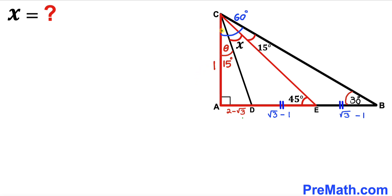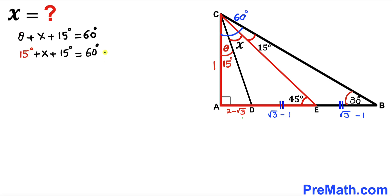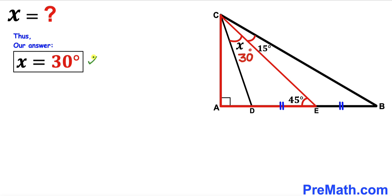For the final step: the whole angle is the sum of theta plus X plus 15 degrees, which equals 60 degrees. So theta + X + 15° = 60°. Since theta is 15 degrees, combining like terms gives X + 30° = 60°. Subtracting 30 degrees from both sides, angle X turns out to be 30 degrees.